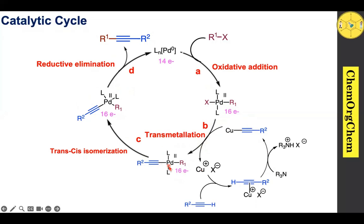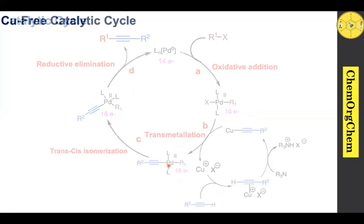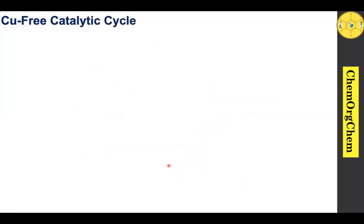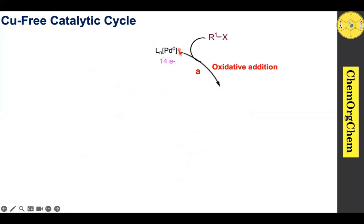Let's see the catalytic cycle for copper-free Sonogashira cross-coupling. This cycle also starts with Pd(0), which is a 14-electron species. This Pd(0) undergoes oxidative addition with aryl triflate or aryl halide to produce the corresponding 16-electron Pd(II) complex.